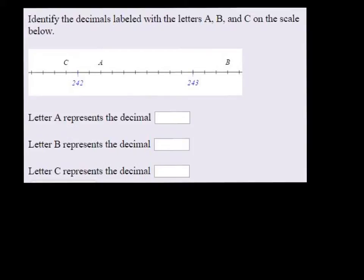The key to identifying numbers on a number line with decimals is to figure out how many spaces there are between the two numbers. So I'm going to count how many spaces there are and label them as I go.